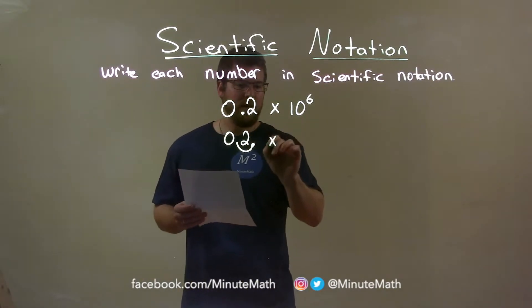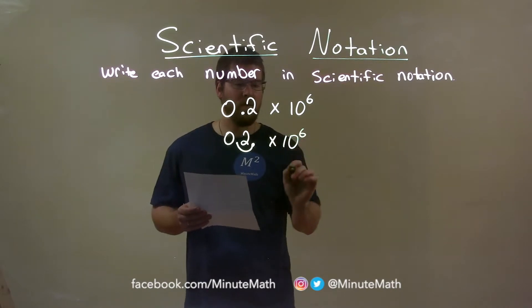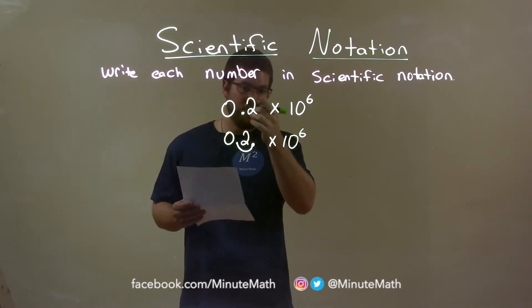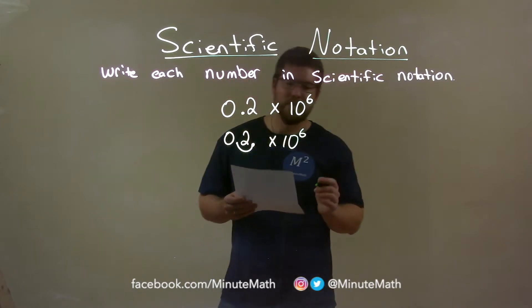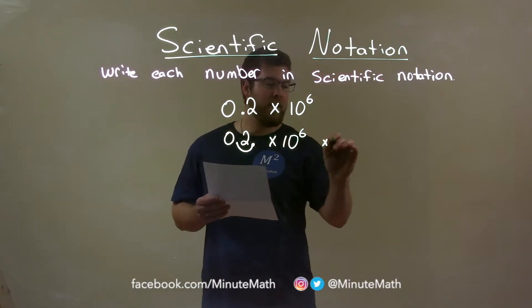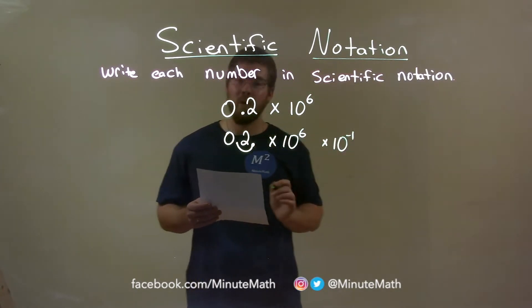Now, if I bring down that times 10 to the 6th power, it's not going to be the same. Obviously, these two are not the same. So since I brought it one spot to the right, we're multiplying that by 10 to the negative 1 power.